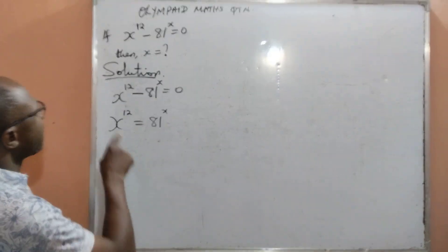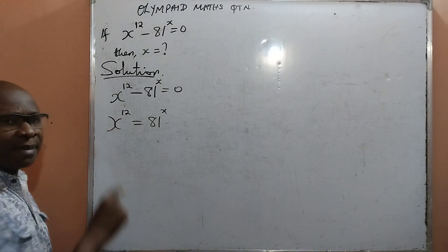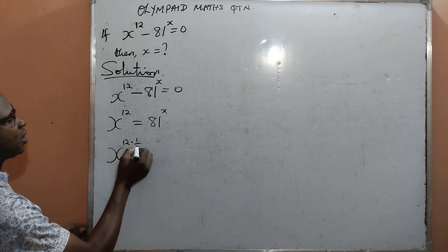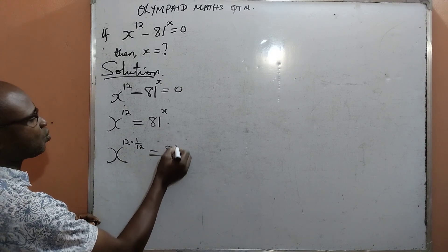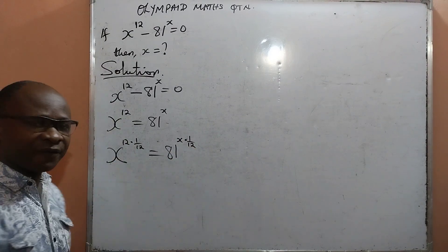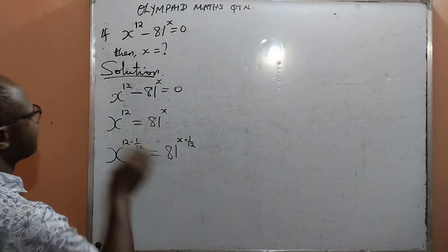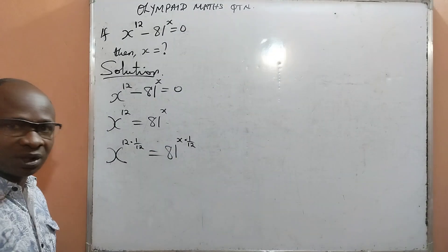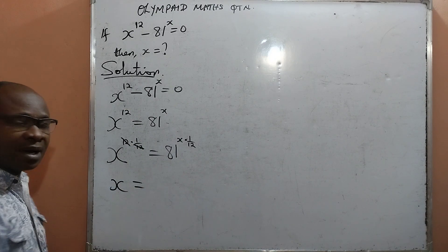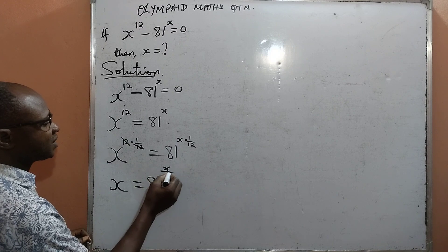Next, I want to remove this 12. To do that, I am going to multiply the power of x by 1 over 12. That means x raised to the power 12, multiplied by 1 over 12, is equal to 81 raised to the power x, multiplied by 1 over 12. I will do the same to both sides of the equation. The power will be multiplied by 1 over 12, and when that happens, 12 cancels out, leaving me on the left-hand side with just x, and on the right-hand side with 81 raised to the power x over 12.